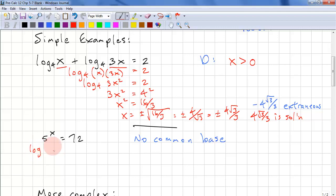So log(5^x) = log(72). We use the log law and pull the x out. So x·log(5) = log(72).